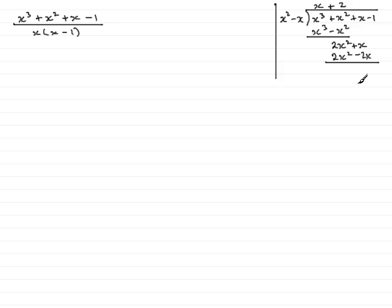And 2 times minus x is minus 2x. Subtract for the remainder, so x minus minus 2x is 3x, and then bring down the minus 1, and this is the remainder.